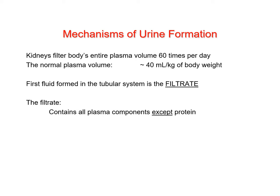Large amounts of blood pass through the kidneys every day, constantly undergoing filtration. The first fluid formed — the filtrate — contains everything the plasma does except virtually all the proteins; a few small proteins might get across.